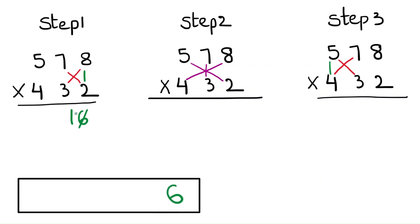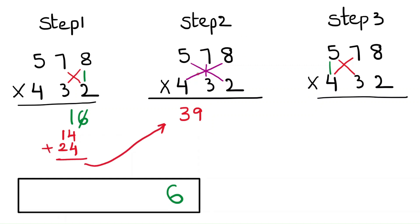Again, do the ones and tens places cross multiplication. Then it will be 8 times 2 is 14 and 8 times 3 is 24 — that makes 39. I have written the sum here. Cross the 9 and place it in the final answer. Now we will do the hundreds, ones, and tens places cross multiplication.